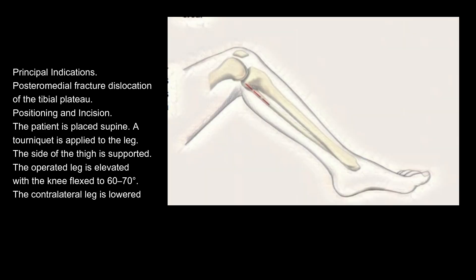Principal indications: posteromedial fracture dislocation of the tibial plateau. Positioning and incision: the patient is placed supine. A tourniquet is applied to the leg. The side of the thigh is supported. The operated leg is elevated with the knee flexed to 60 to 70 degrees. The contralateral leg is lowered.